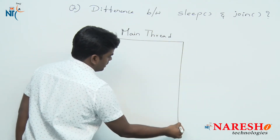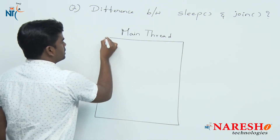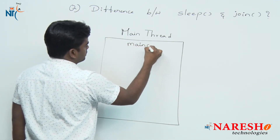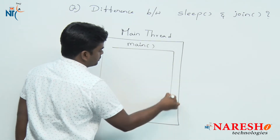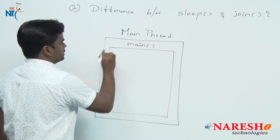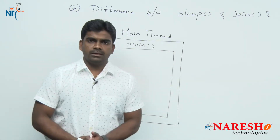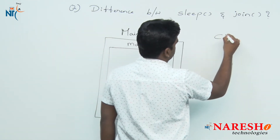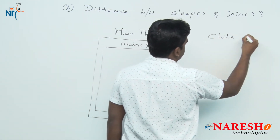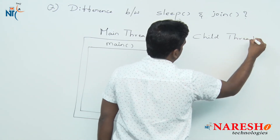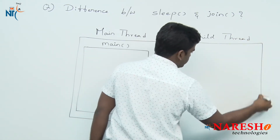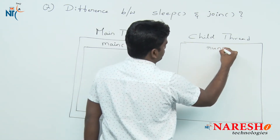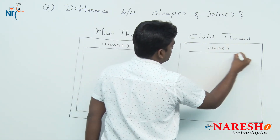Suppose here we are taking the main thread. In the main thread, execution starts from the main method. The main thread logic we need to place inside the main thread. Now, we just want to create a child thread, and here the user-defined thread logic we need to place inside the run method.